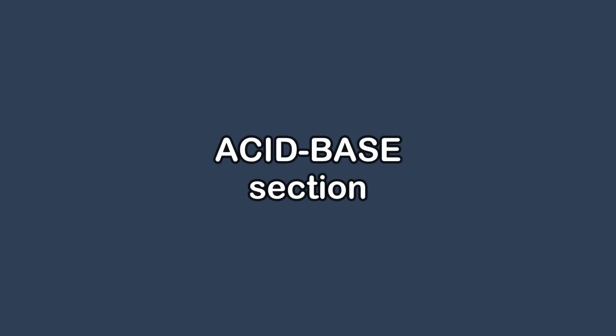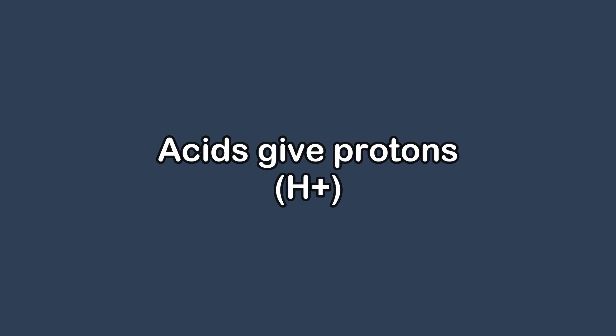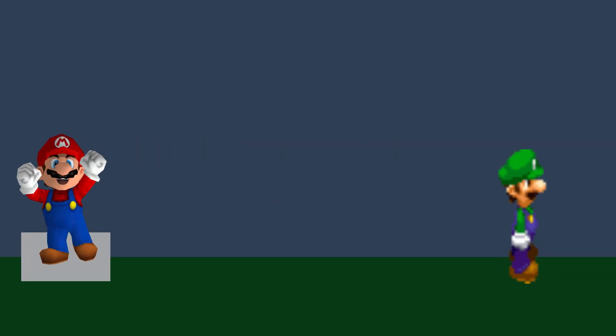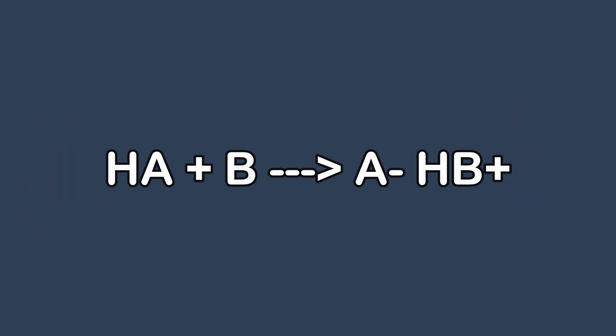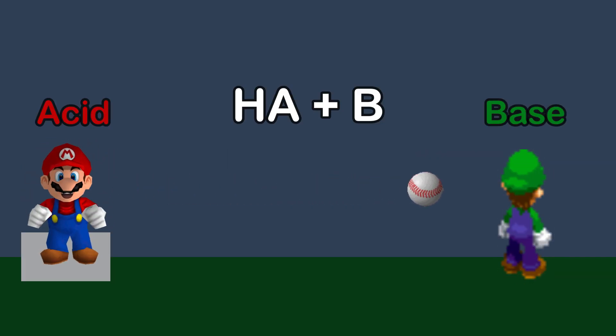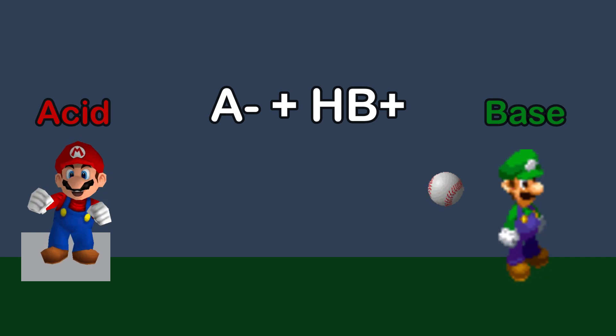Now we're going to move closer to the acid-base part. Bronsted and Lowry both came up with a theory for defining acids and bases: acids are proton donors and bases are proton acceptors. Think of it like acids and bases are playing baseball — the acids are the pitchers and the bases are the catchers. For example, HA plus B turns into A⁻ plus HB⁺. The baseball, hydrogen, is thrown and caught by the catcher; the pitcher no longer has the ball, but the catcher does.